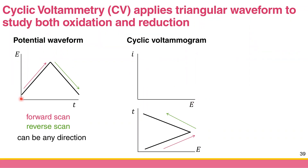Specifically in cyclic voltammetry, since you scan the potential forward and then backward, you can overlay the potential and time onto the cyclic voltammogram. If you scan positive first and negative later, you start from the left-hand side of the voltammogram, go to the right-hand side, and then go back to the left. Vice versa, if you scan negative first followed by positive, it will be something like this instead.